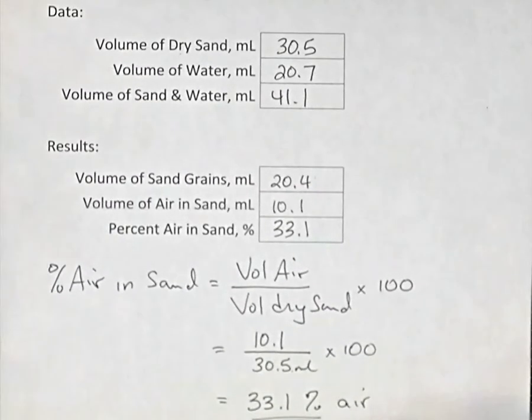So out of the sample of dry sand, about a third of it is air. And that type of calculation will be on your test and probably on your final exam as well for grade 9 advanced science.